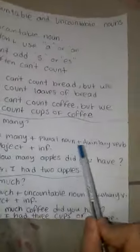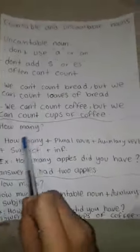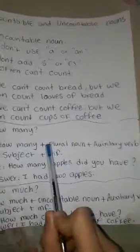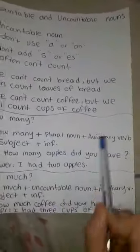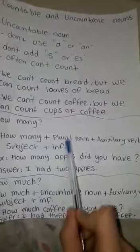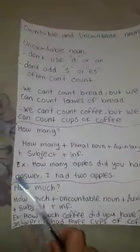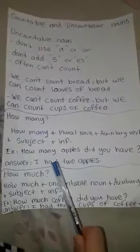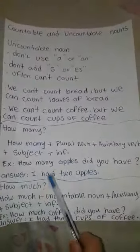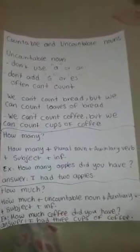How many: the structure is 'how many' + plural noun + auxiliary verb + subject + infinitive. Like: 'how many apples did you have?' — apples is a plural noun, did is the auxiliary verb, you is the subject, and have is the infinitive. Answer with a number: I had two apples.